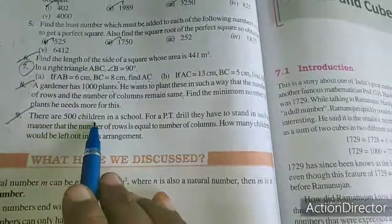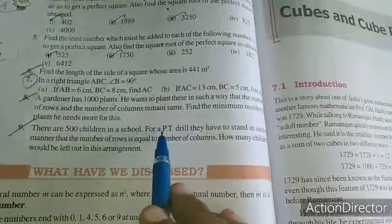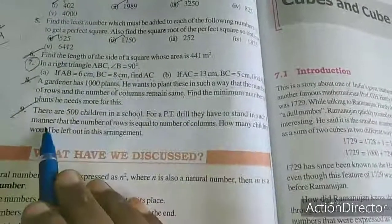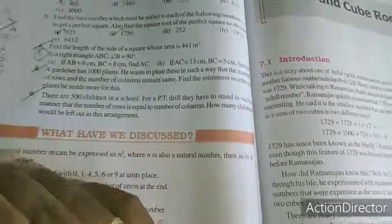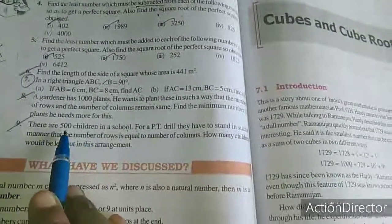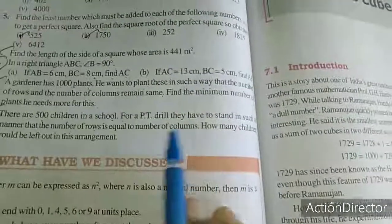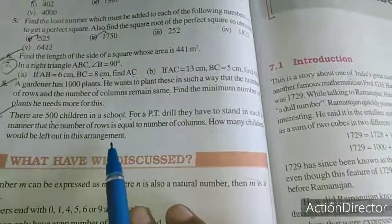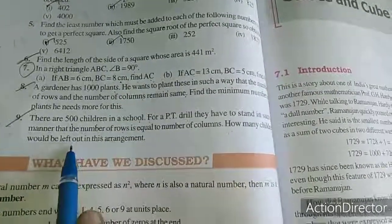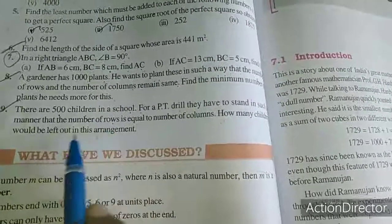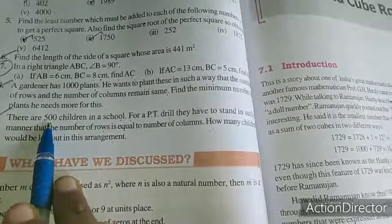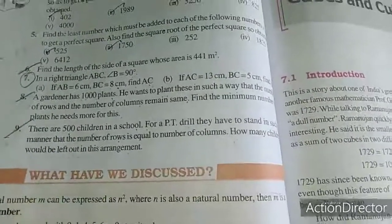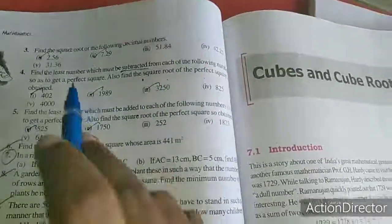Now we will move to the 9th sum. There are 500 children in a school. For PT drill, they have to stand in such manner that the number of rows is equal to the number of columns. So how many children would be left out in this arrangement? Left out equals subtraction. So square root is what we need to find. This is like the fourth sum.